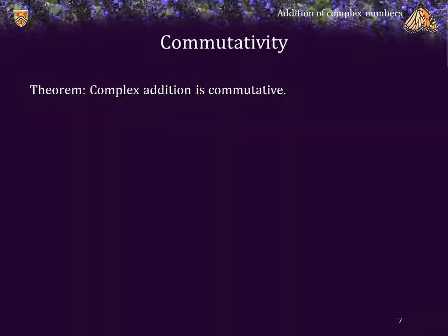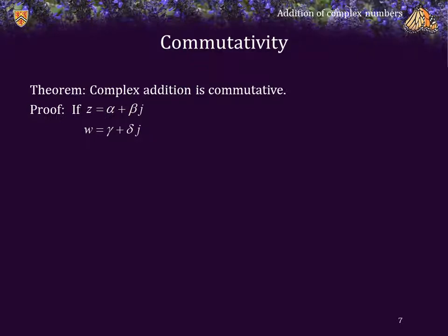Theorem: Complex addition is commutative. So let's suppose that z is alpha plus beta j and w is gamma plus delta j. Then z plus w is equal to that sum. We sum the real and imaginary components. But the real and imaginary components are real numbers. So real addition is commutative, so we can swap alpha and gamma and beta and delta.